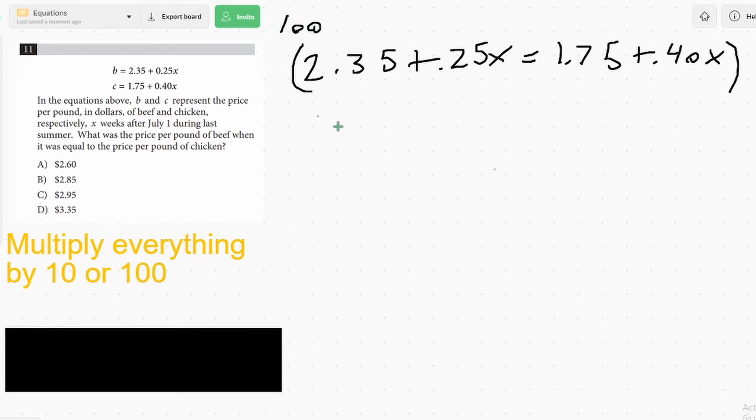So both sides multiply by 100. 2.35 becomes 235. 0.25X becomes plus 25X. 1.75 becomes 175. And 0.4 becomes 40X. So now this looks a lot nicer. We like working with whole numbers a lot better, and we can solve this more easily.